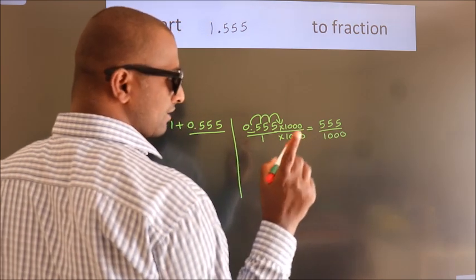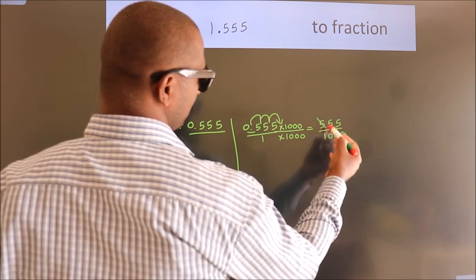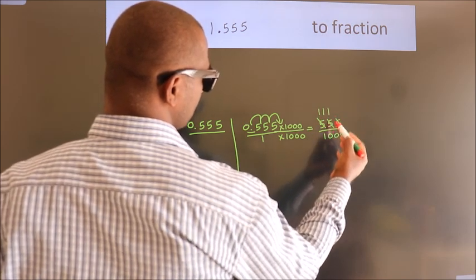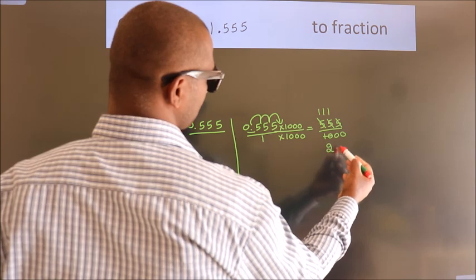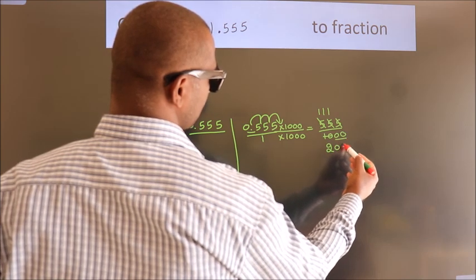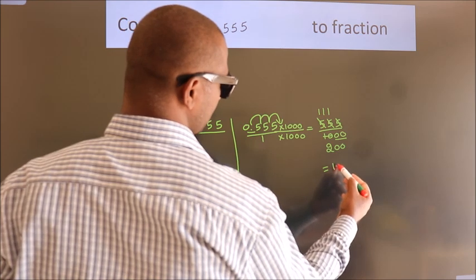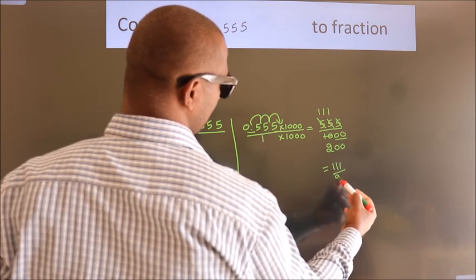Now I cancel with 5. 5 1s, 5 1s, 5 1s, 5 2s. These zeros as it is down. So the fraction we got is 111 by 200.